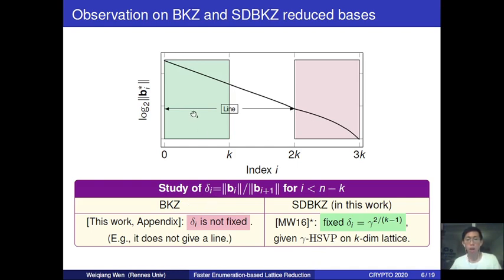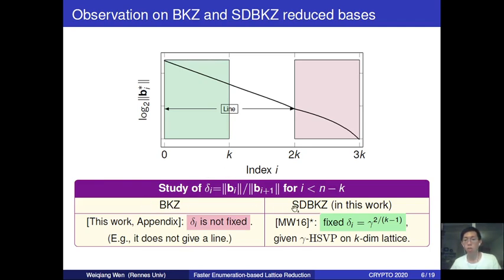But this is not the case for BKZ. For BKZ, the quantity delta_i is not fixed for different indices i, so it does not give a straight line. We refer the audience to the appendix of our paper on ePrint for more details on the BKZ case. Because of this good property of SDBKZ, we choose it as a subroutine in our new algorithm, though it does not mean it is impossible to use BKZ to reach the same result. We leave that as future work.